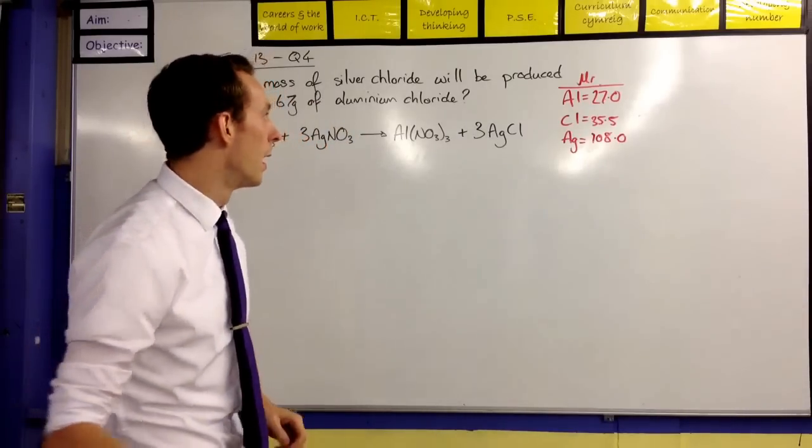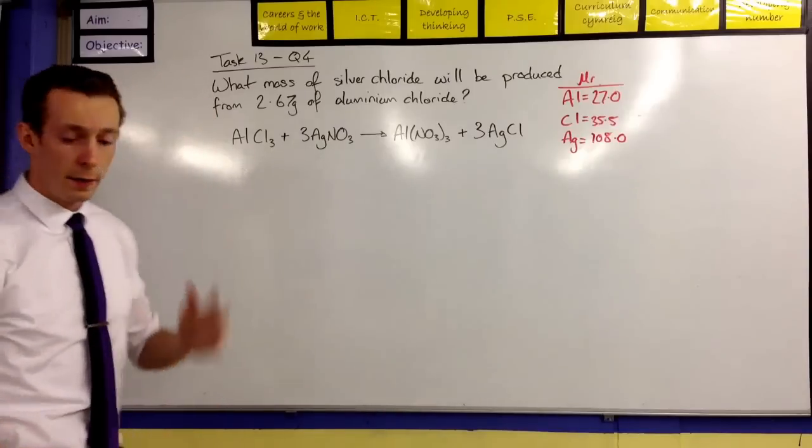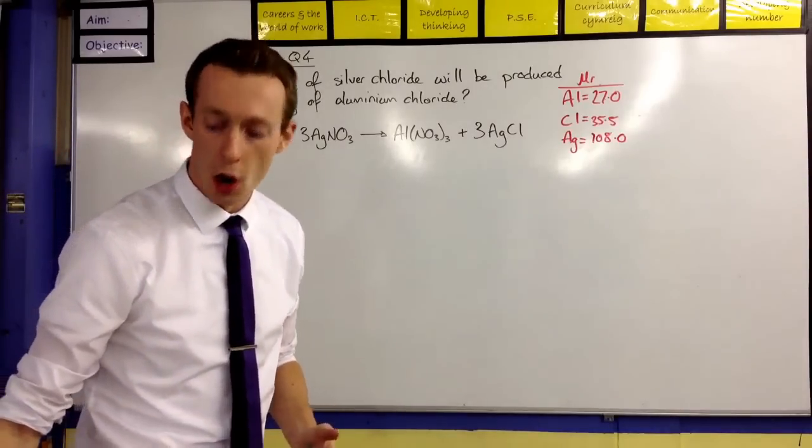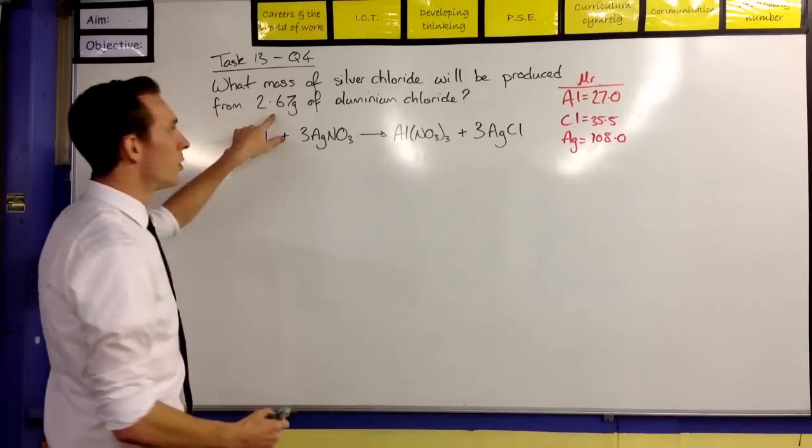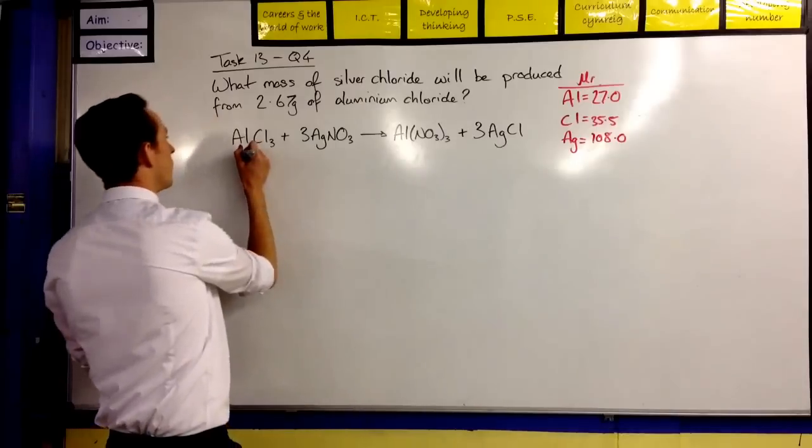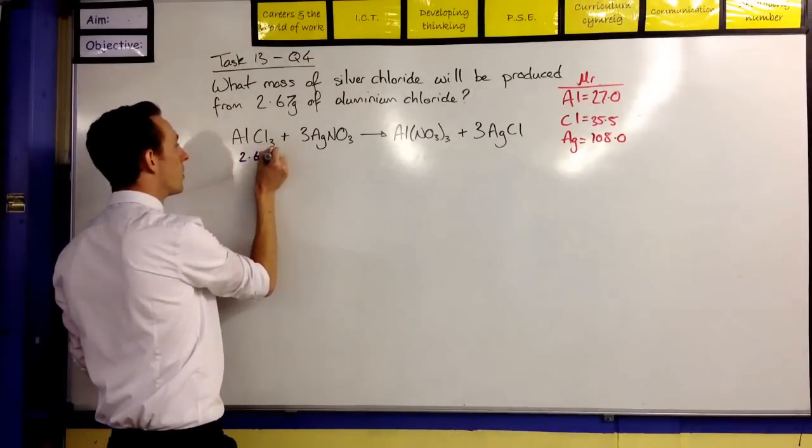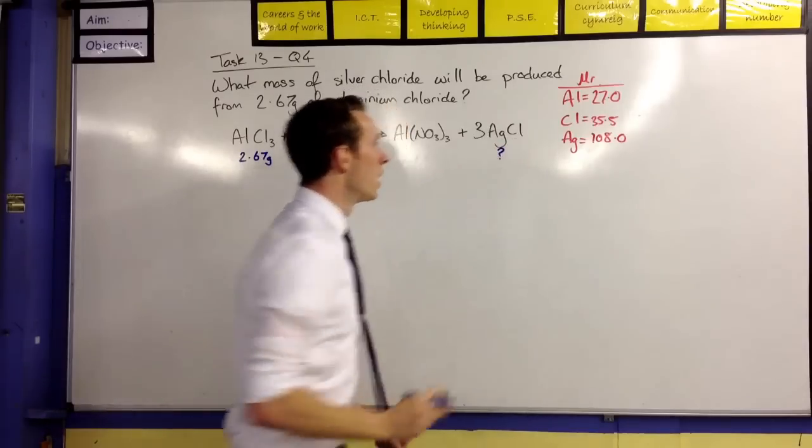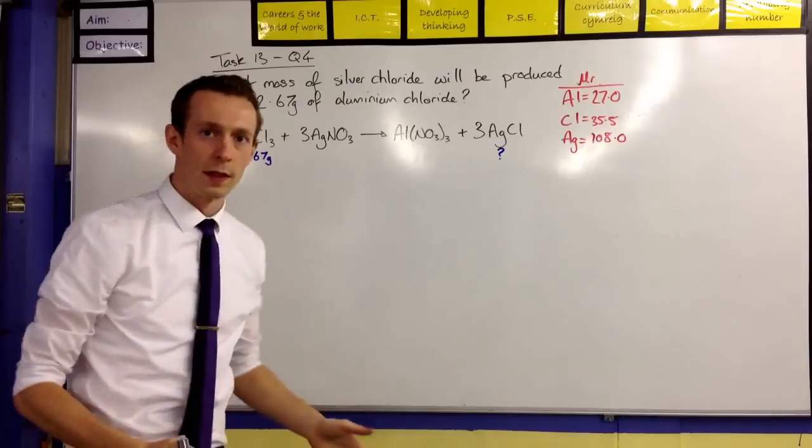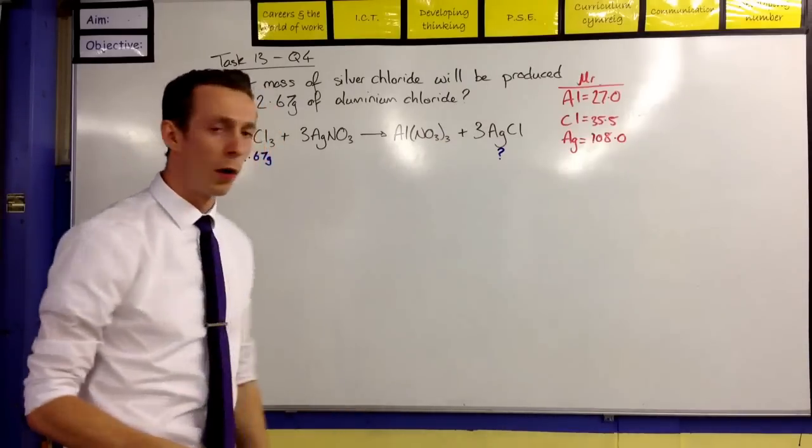So the very first thing we're going to do by looking at this is we're going to, first of all, pick out what it is that we know and what it is we're trying to find out. Okay, so we're told we have 2.67 grams of aluminium chloride. So 2.67 grams. And we want to find out the mass of the silver chloride. So we're kind of forgetting about these other two things here. Okay, we're focusing in now on what it is we need to know about.